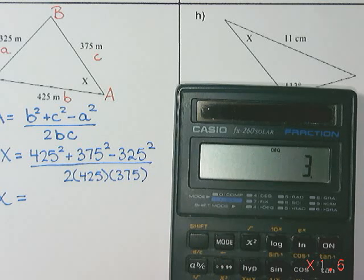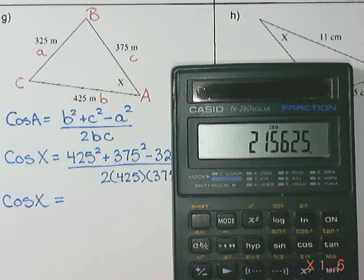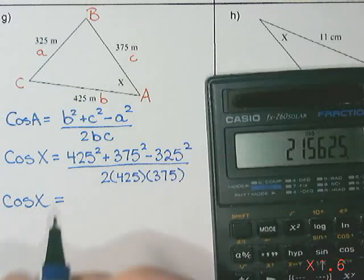take away 325 squared, which is 215,625.